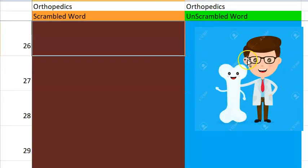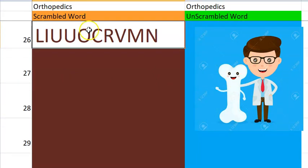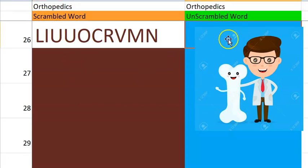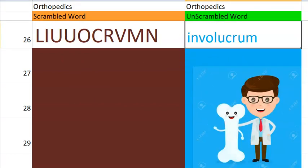Now let us go to the 26th one — a huge long one. Think orthopedics — think about bone infection, chronic infection. What is there around the sequestrum? Involucrum. Very good.